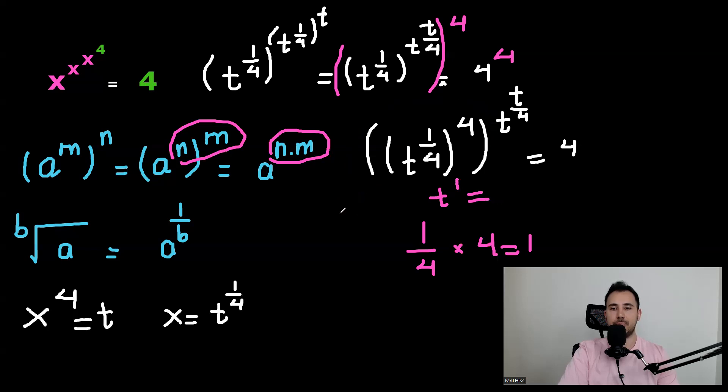So that means I will multiply one over four by four. I'll get a one. So this will be one. And then we'll have T to power of one, which will be T. What does it mean? That means all of this is just T. Let's go. If all of that is T, well, it looks a lot simpler.